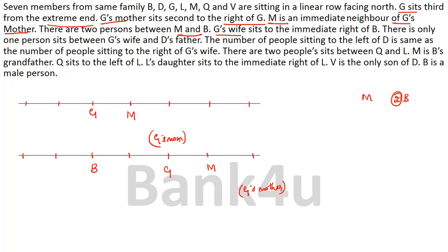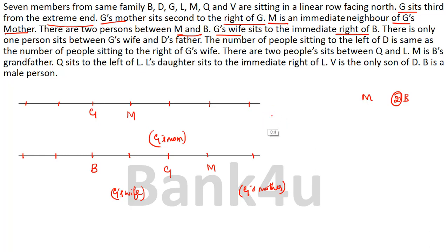Next clue: G's wife sits immediately to the right of B. B is placed, and B's immediate right must be G's wife. Checking the remaining sub-possibility where B was placed differently — there's no room to the right of B for G's wife, so that position for B is eliminated. With B at the valid position, the immediate right seat is available and G's wife is placed there.